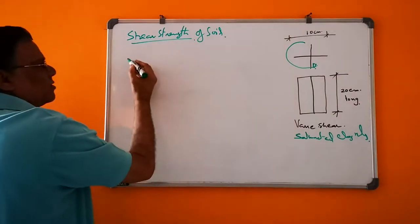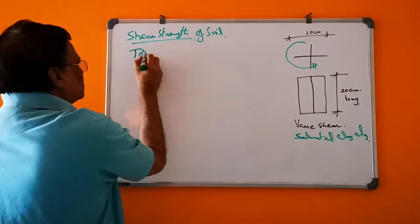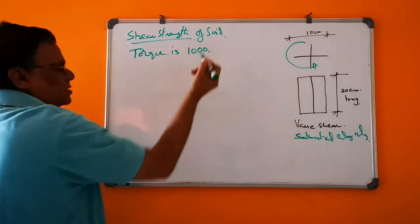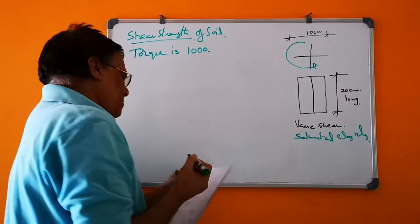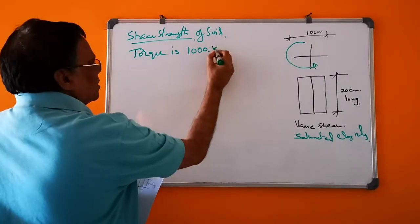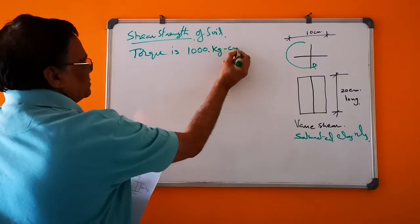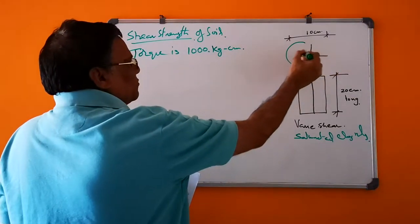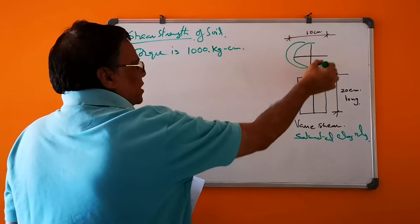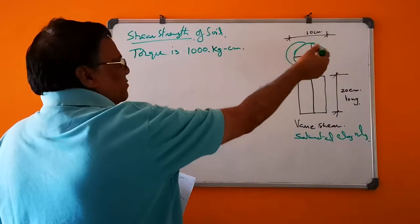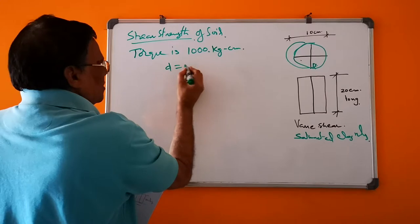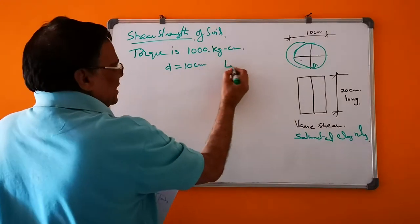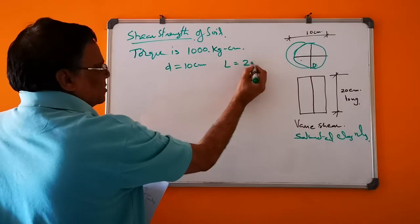So the rotation, the torque is 1000 kg cm. The diameter of the Vane is D = 10 cm, whereas length of this is 20 cm.